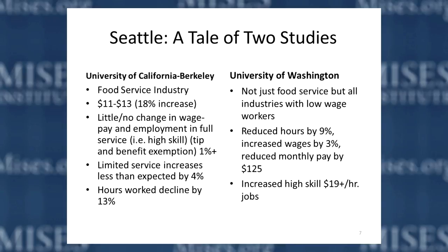Recently, Seattle has been in the news because they're taking the minimum wage up to $15 an hour. Two important studies were done: one by the University of California, Berkeley, which tends to be left-leaning and was commissioned by the city council; and one by the University of Washington, which is more centrist and was commissioned by the mayor. The Berkeley study wanted to downplay the adverse effects of the minimum wage, using sophisticated methodology to overcome the problem of ceteris paribus.